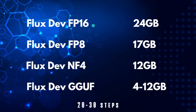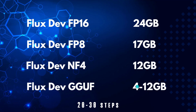The biggest model available is the FP16, where you can get the best quality. However, the size is 24 gigabytes, so for those with lower-end GPUs it could be a challenge. If you have a 3090 or 4090, this is the model you want. The FP8 version is only 17 gigabytes, and the NF4 v2 version is only 12 gigabytes. Not too long ago, GGUF models were released ranging from 4 to 12 gigabytes, and we'll talk about the differences in the GGUF version compared to the others.